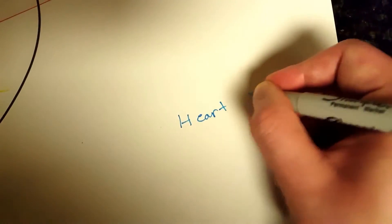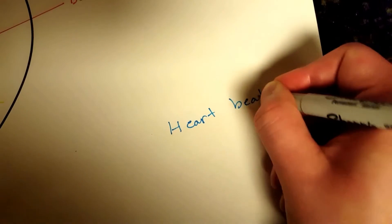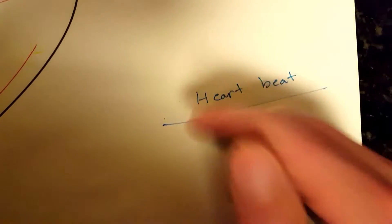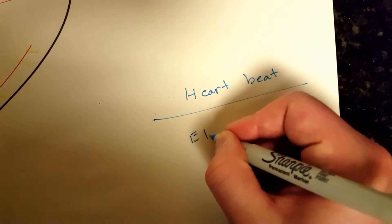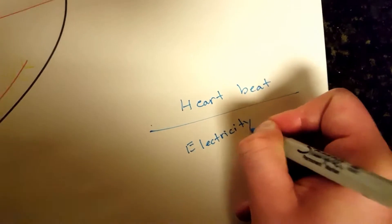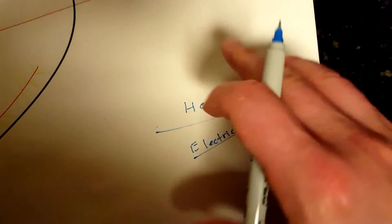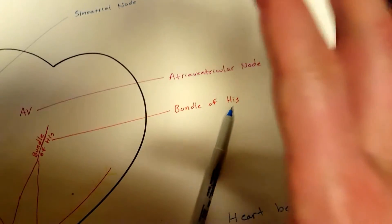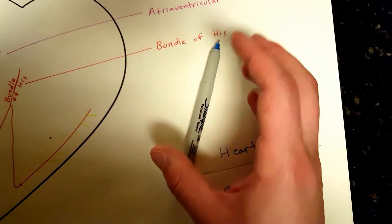So the heartbeat, how is a heartbeat created? Well, it actually starts with electricity. Electricity is created in your heart and that triggers the heart to contract. Now where is this electricity created and how does it work?